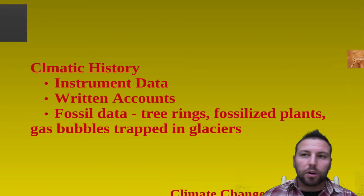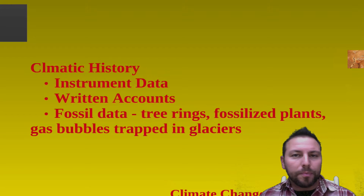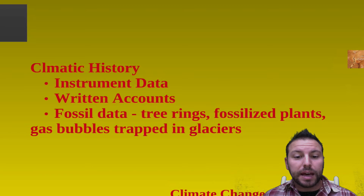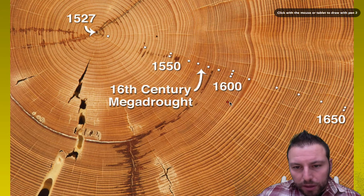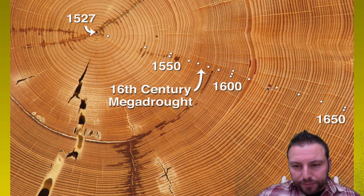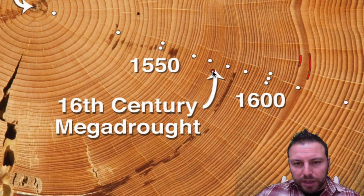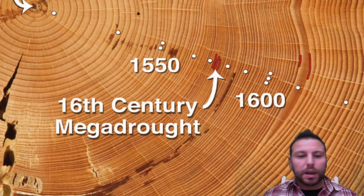Written accounts are also very good — sailing vessels have been going around for hundreds, almost thousands of years, and there are other written accounts from land-based sources as well. Another interesting way we see climate history is looking at fossil data: tree rings, fossilized plants, or gas bubbles trapped in glaciers. By looking at the spacing between tree rings, we can see good growth periods — the dark part is summer growth, the lighter is winter growth. More growth usually indicates more moisture in the atmosphere. We can identify major droughts where lines are extremely close together, versus periods of good growth where they're far apart. We're able to match up recent written accounts with tree ring data to confirm stories.